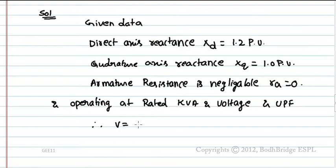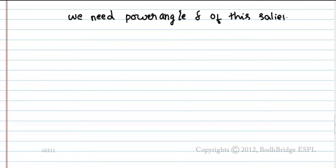Therefore, V equals 1 per unit, Ia equals 1 per unit, cos theta equals 1, and theta equals 0. We need to find the power angle delta of this salient pole alternator.